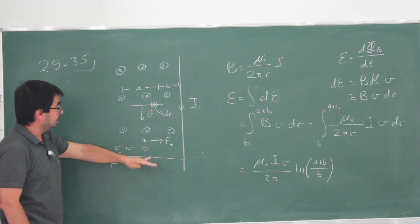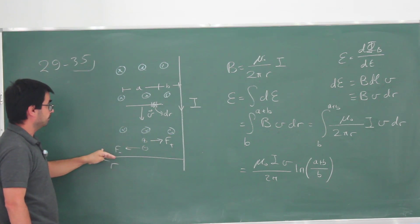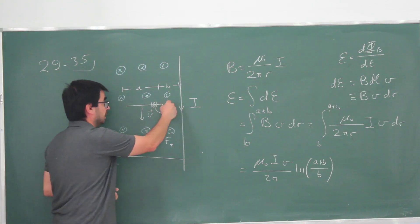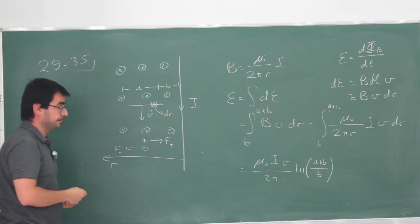As this wire is going down, the positive charges are going to be pushed to the right and negative charges are being pushed to the left. They are going to end up with a larger EMF on this side than on that side.